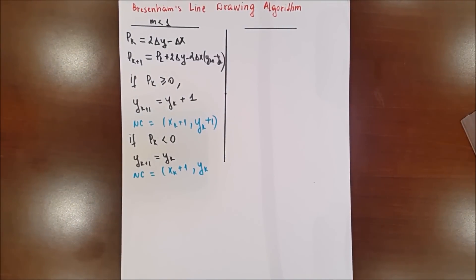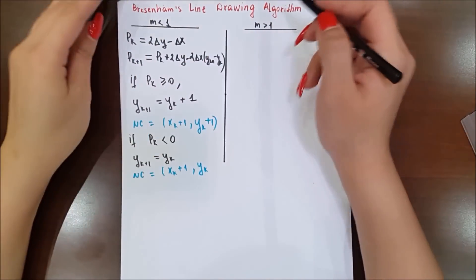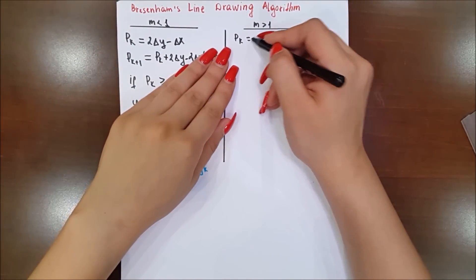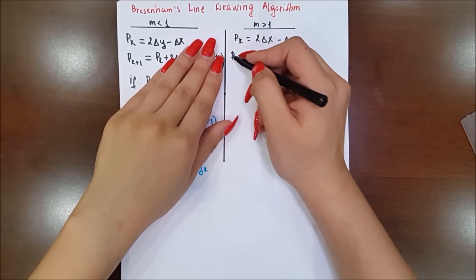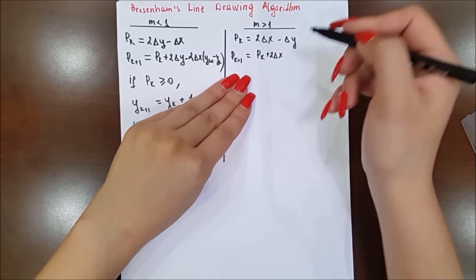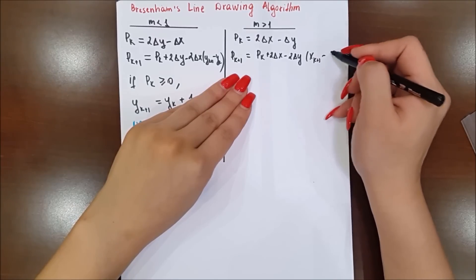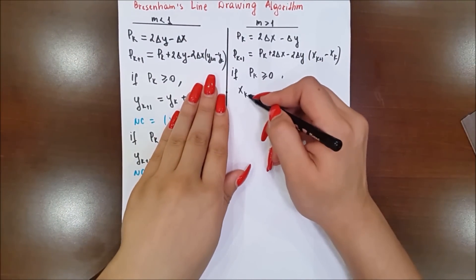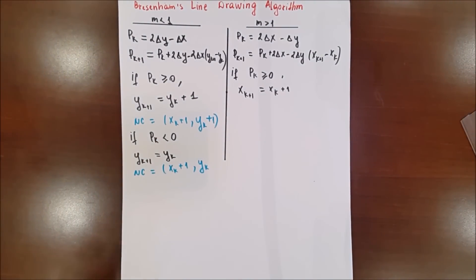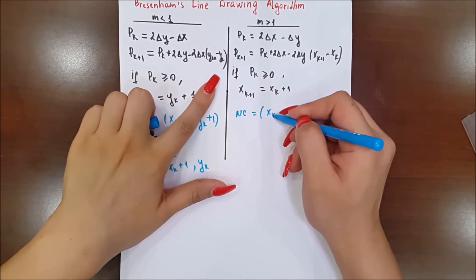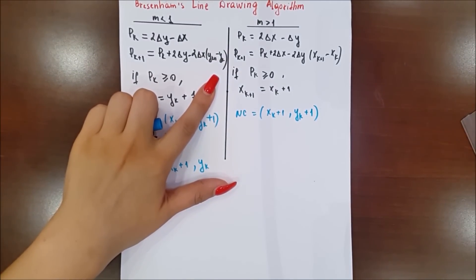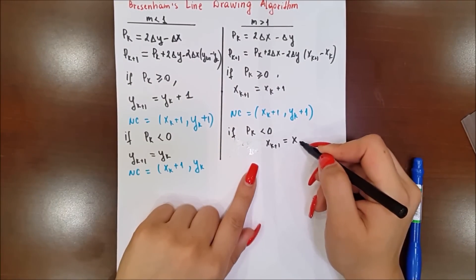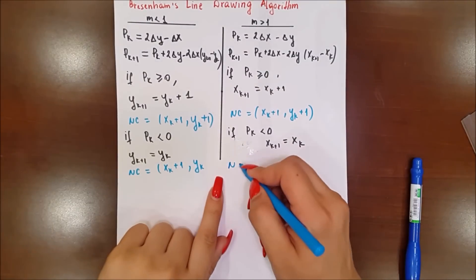Now let's see Case 2: when slope is more than 1, we swap the roles of x and y in the formulas. When slope is more than 1, the y coordinate will always change with unit interval, so in every iteration the next y increases by 1, and the computer only decides the x coordinate. If pk is greater than or equal to 0, x increases by 1, giving next coordinate (xk+1, yk+1). Otherwise, x stays the same and the next coordinate is (xk, yk+1).